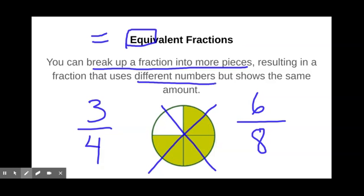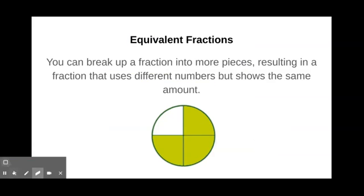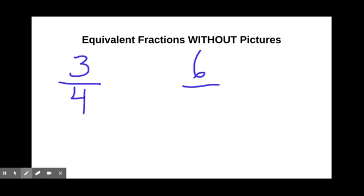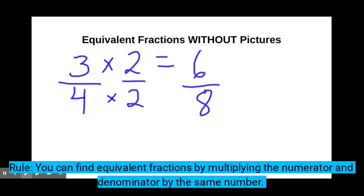Now equivalent fractions, we can use a picture to figure these out, or we can do it without pictures at all. Let's take a look at the one we just did. If I wanted to go from three fourths to six eighths and show that those are equivalent without drawing a picture, how could I do that? Well, going from three to six, all we really did is multiply by two. Going from four to eight, again, all we really did is multiply by two. You can find equivalent fractions by multiplying your numerator and denominator by the same number.